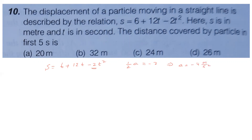The coefficient of t squared is half of acceleration: half a equals minus 2, so acceleration equals minus 4 meter per second square. The coefficient of t gives initial velocity: u equals 12 meter per second. Since acceleration is opposite to velocity, the particle will decelerate, stop, and return.